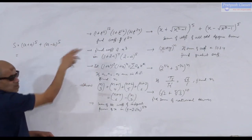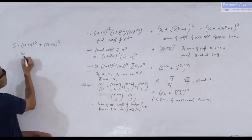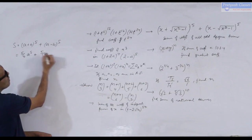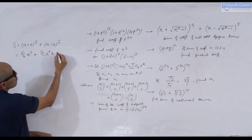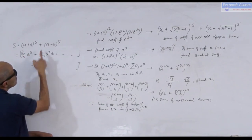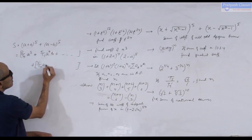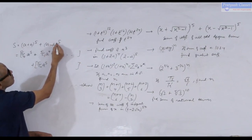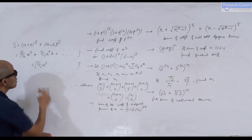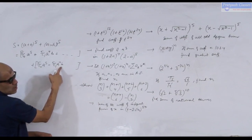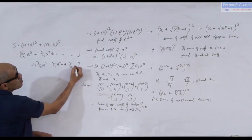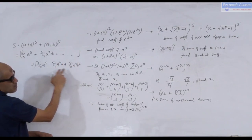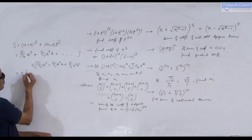Here a = x and b = the second expression √(x³-1). Expanding (a+b)⁵ gives 5C0·a⁵ + 5C1·a⁴·b + ... and expanding (a-b)⁵ means replacing b with -b, so the second term becomes -5C1·a⁴·b, then +5C2·a³·b², and so on with alternating signs. When we add both, some terms cancel.